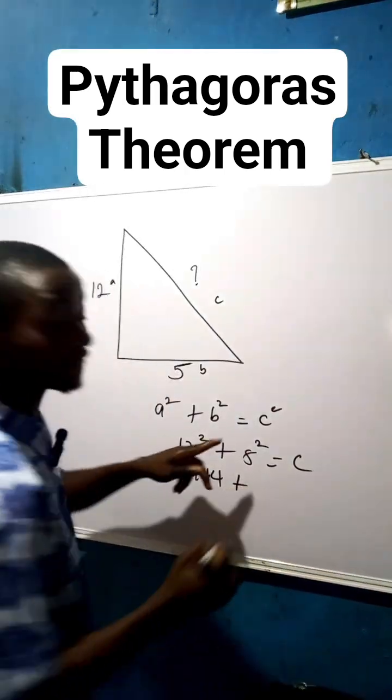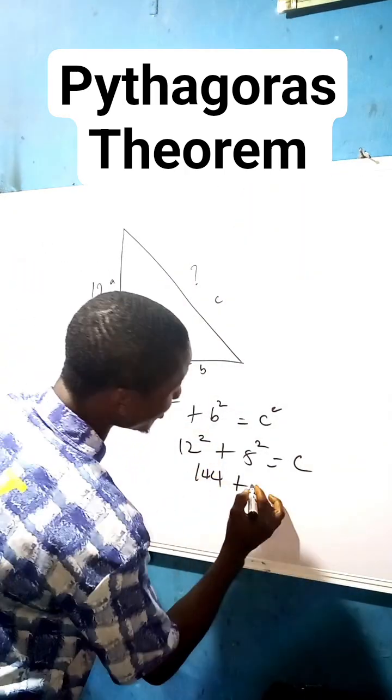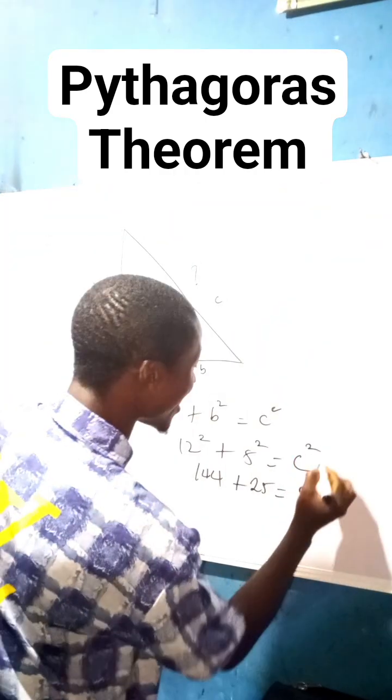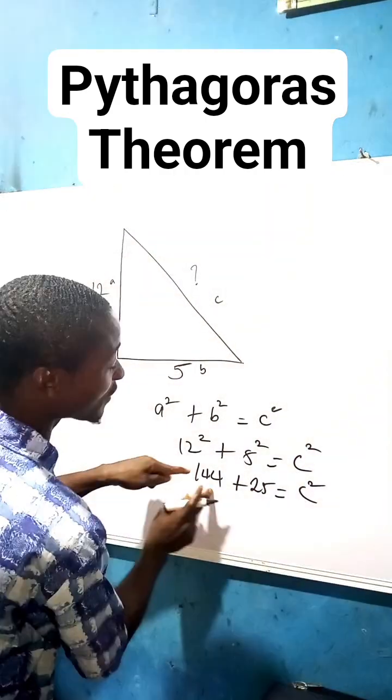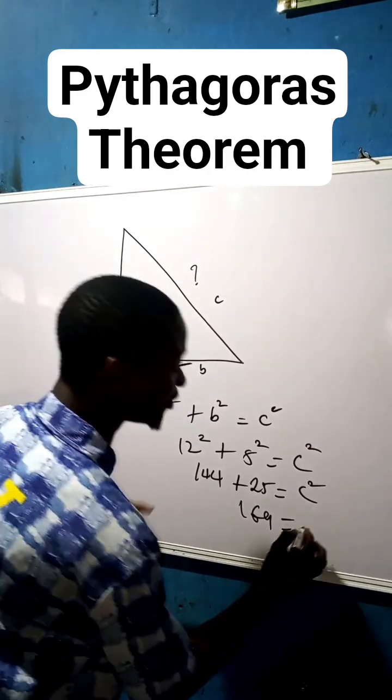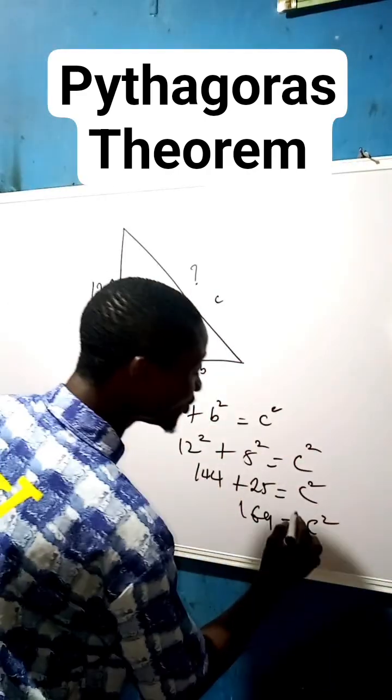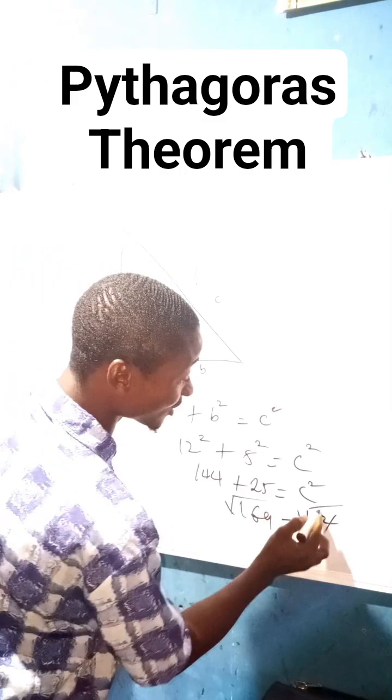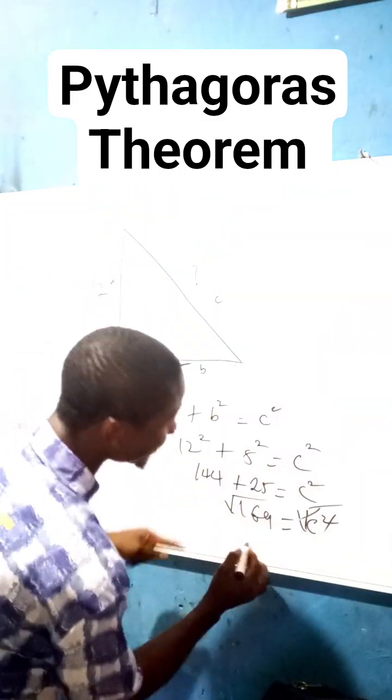C square, don't forget your square. Now 144 plus 25 is 169 equals to c square. So square root both sides, so square we strike out square roots, then c is now equals to 13. Just 13.